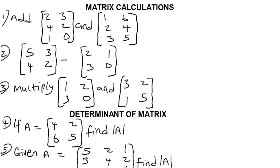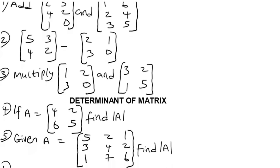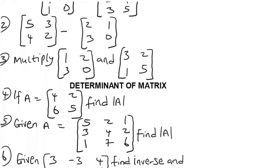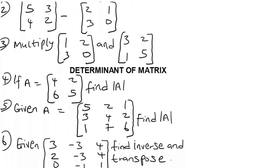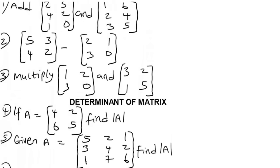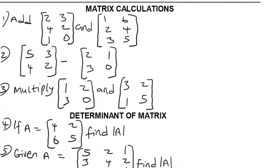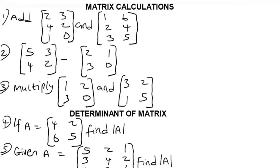Before we get the Casio calculator and go into the details, let's quickly look at the equations. As you can see, I have up to six equations here. We'll learn how to solve inverse and transpose of a matrix, the determinant of a matrix, and how to add, subtract, and multiply matrices using the Casio fx-991ES Plus calculator.